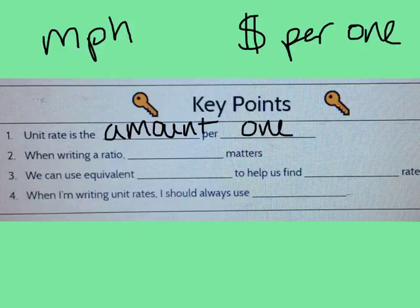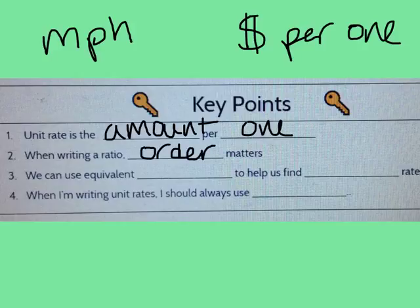When writing a ratio, order matters. We know from our homework that we have to have ratios in order for them to be correct. Flipping a ratio backwards means it is no longer the correct ratio. We can use equivalent ratios to help us find unit rate.